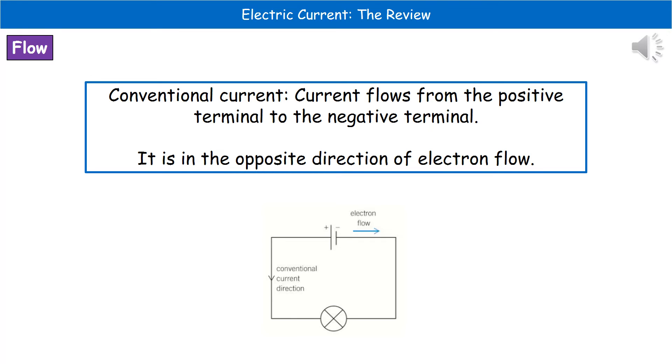Now, the reason we've got the conventional current direction going in the opposite direction to the electrons is because before we knew that electrons existed, that's how scientists thought the current actually went. So when we're talking about the conventional current, it always goes in the opposite direction to the electron flow, so from the positive to the negative terminal.